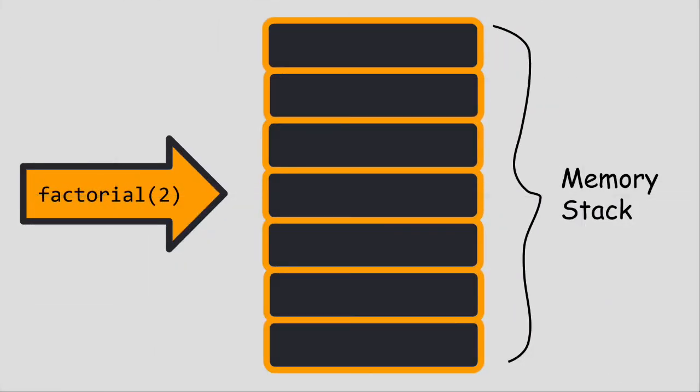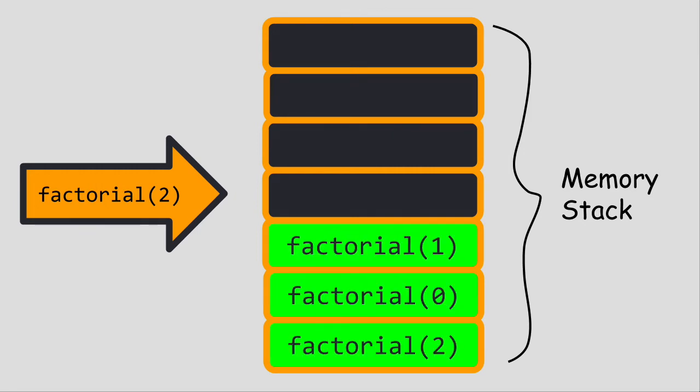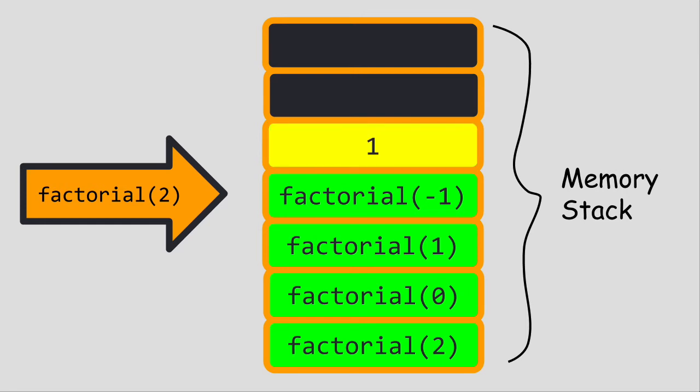In order to keep track of all these function calls, the program uses a structure known as a memory stack. Function calls are passed on to the stack, and then popped off in the opposite order.